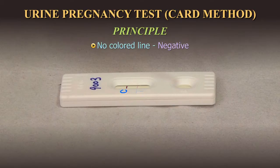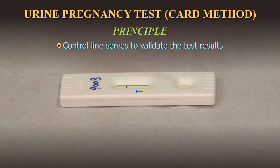Absence of this coloured line in the test region indicates a negative test result. To serve as a procedural or built-in control, a coloured line will always appear at the control line region if the test has been performed properly, regardless of the presence of HCG in the test specimen. This control line serves to validate the test results.